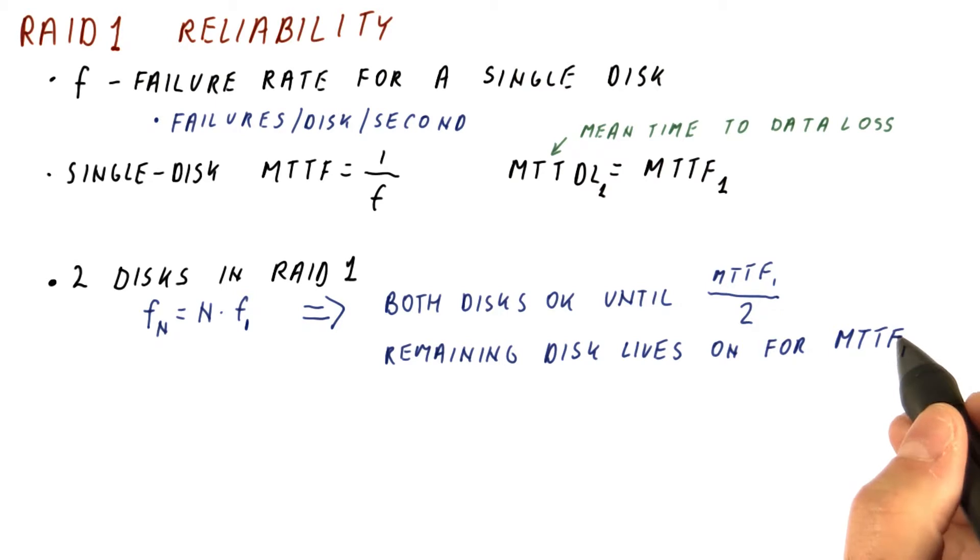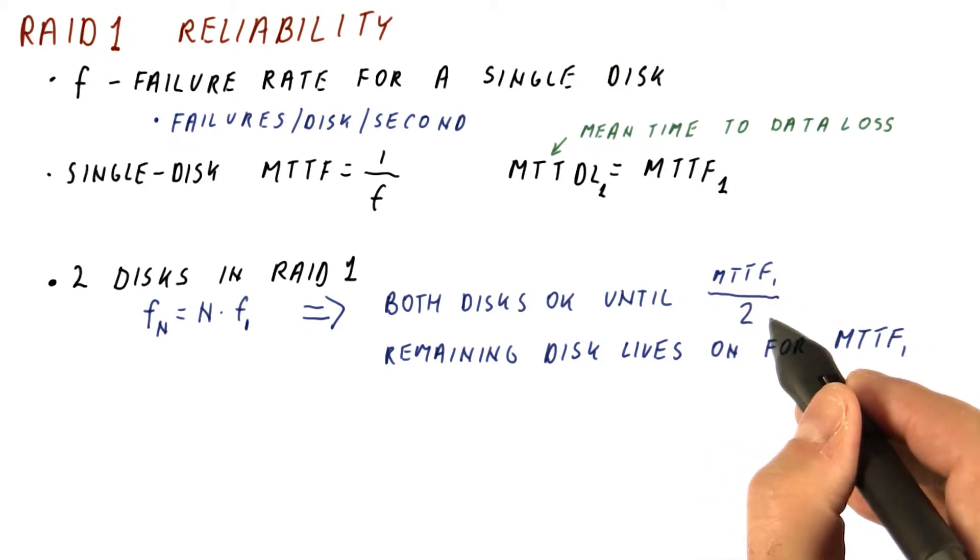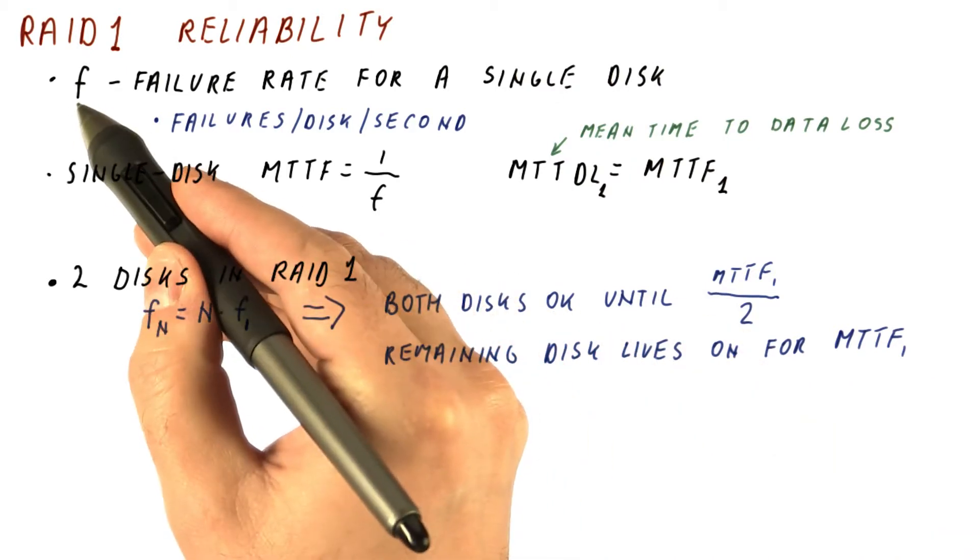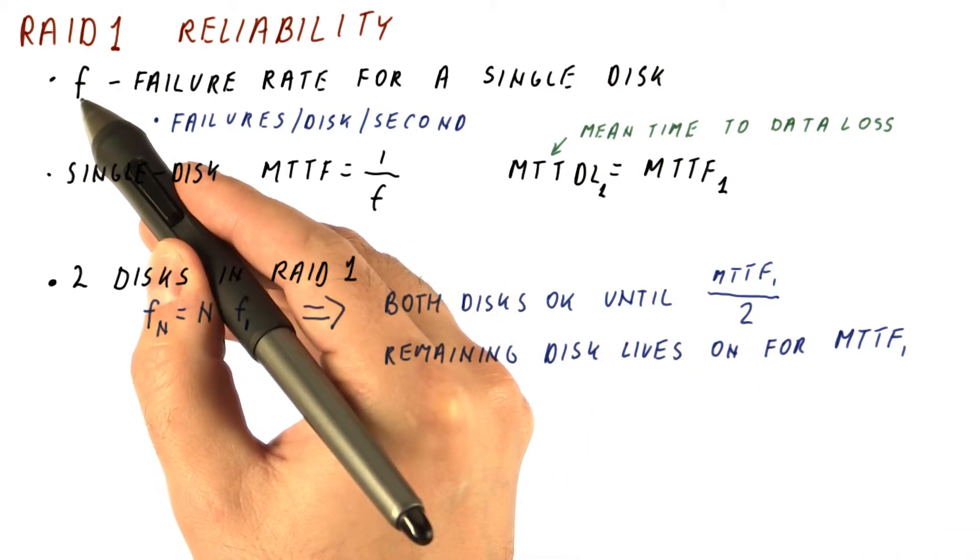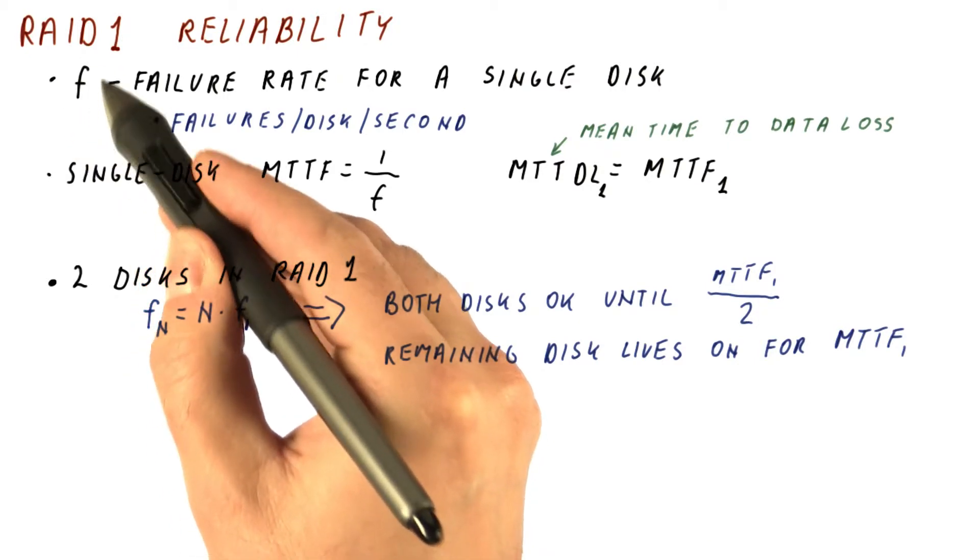This is very important to understand. If we have a working disk at some point in time, the MTTF for that disk is going to be the overall MTTF for one disk. This MTTF is not affected by the fact that this disk has already been working for all this time. Why? Well, because the failure rate is constant. It's not affected by time. So if we have a working disk, its failure rate is always the same.